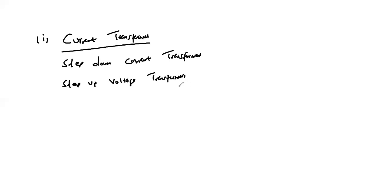Current transformers are step-down current transformers — they step down the current and in the process step up the voltage. A current transformer basically has a primary coil of one or more turns of heavy cross-sectional area. In some transformers, the bar carrying the high current acts as the primary coil, and this single bar is connected in series with the line carrying the high current.